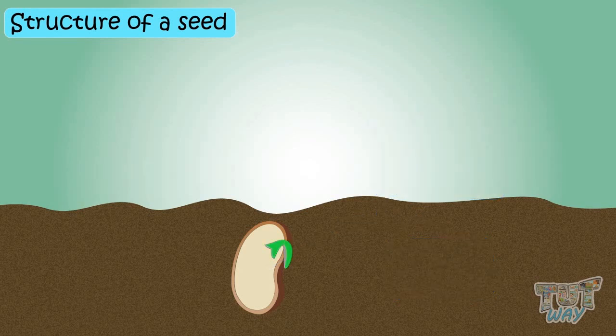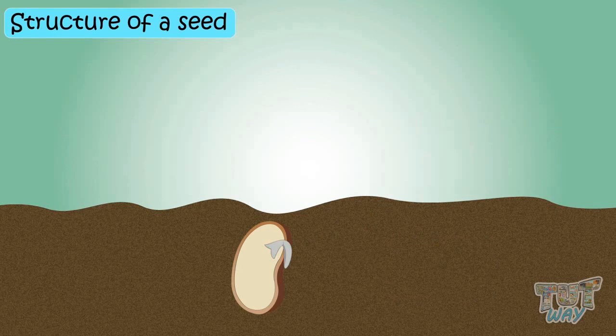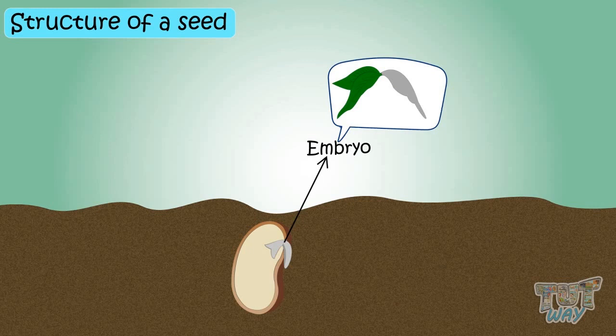The tiny baby plant inside the seed is called the embryo. The embryo has two parts: radicle and plumule.